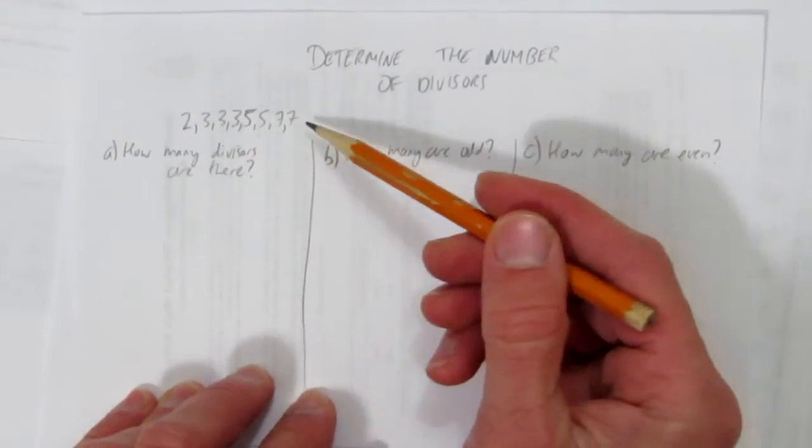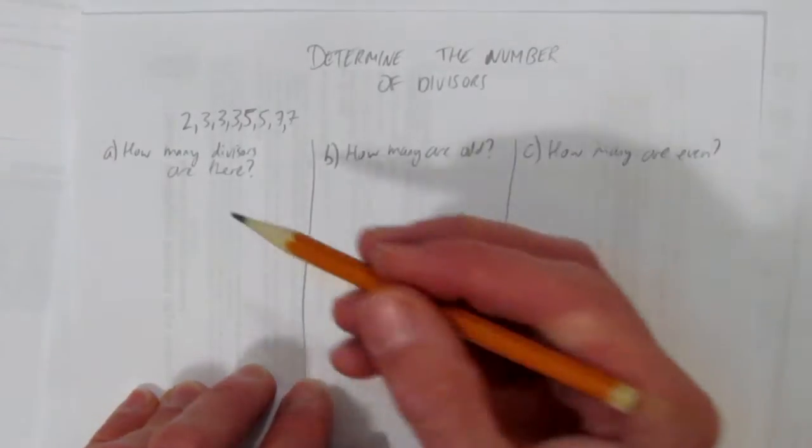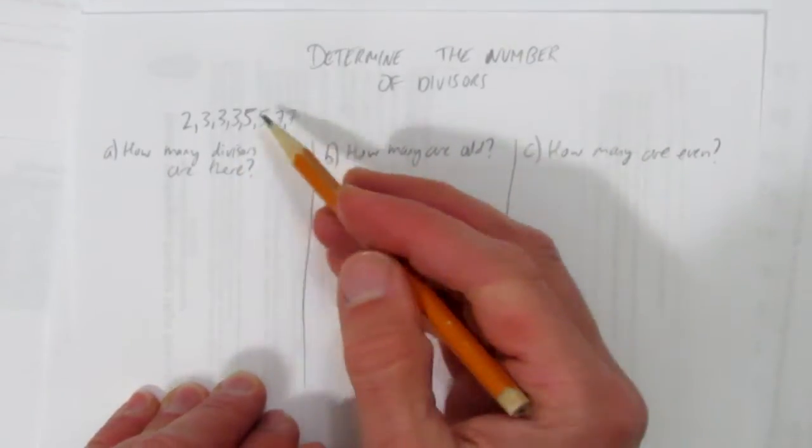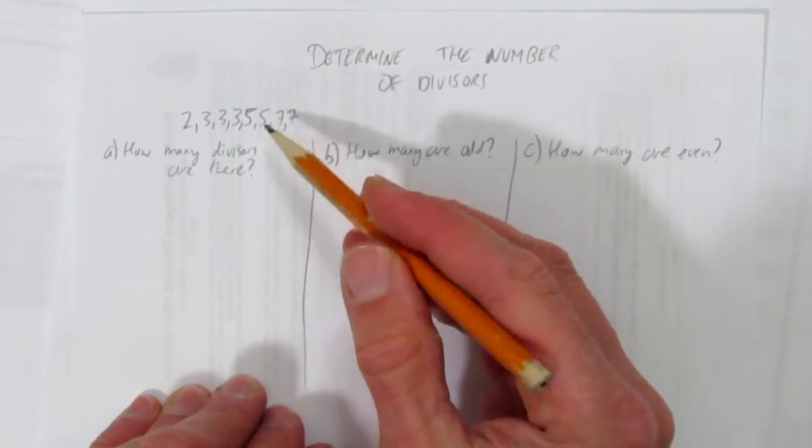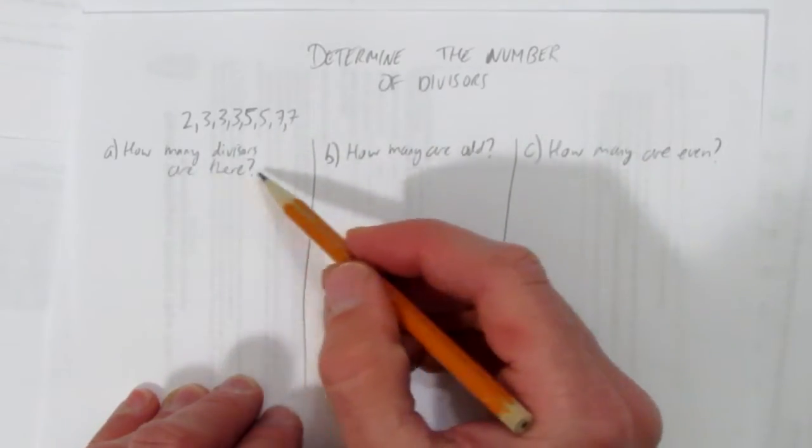You could multiply them all together, you'd know the number, but it doesn't matter. This is breaking that number down into its prime number divisors, which ended up being these numbers. And then the question is, how many divisors are there?